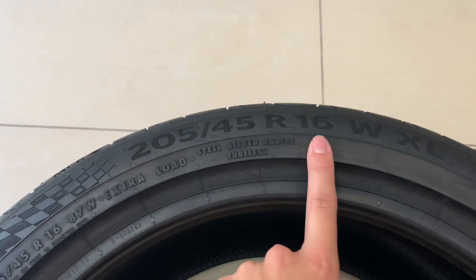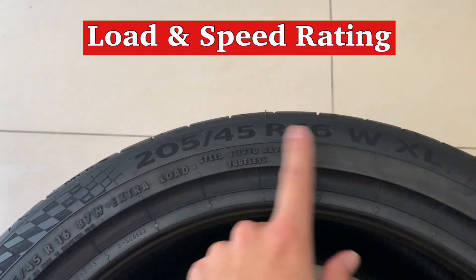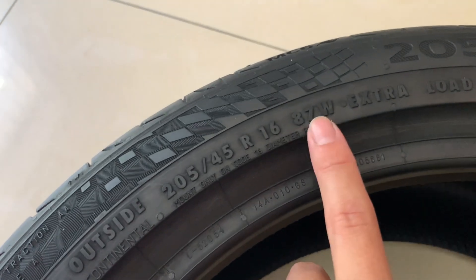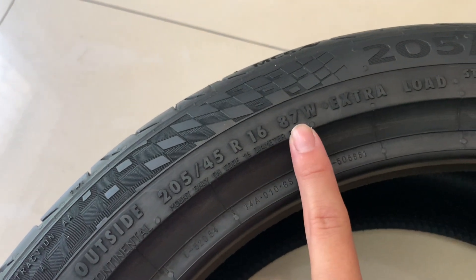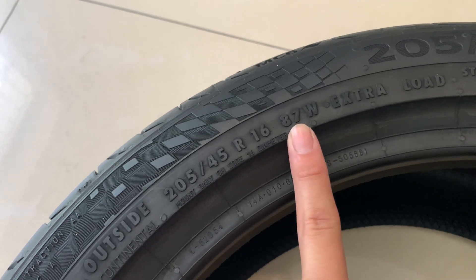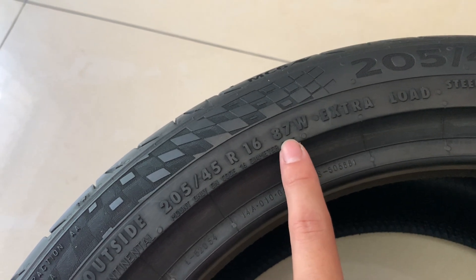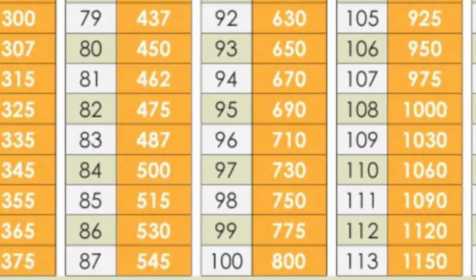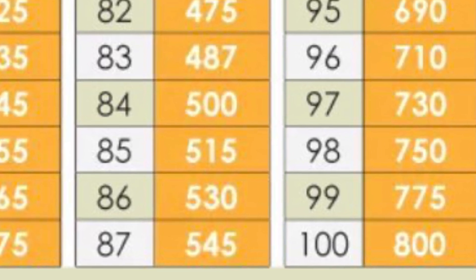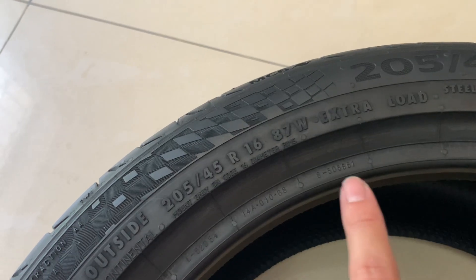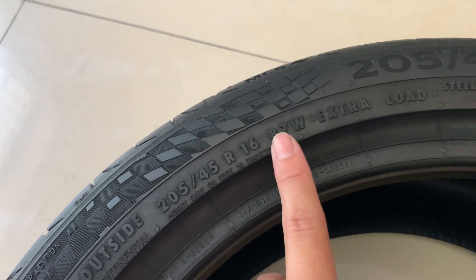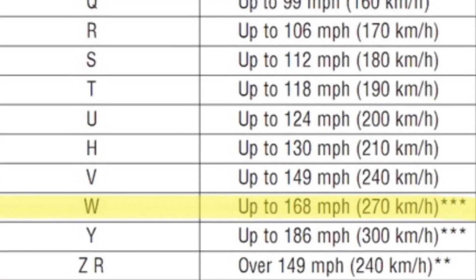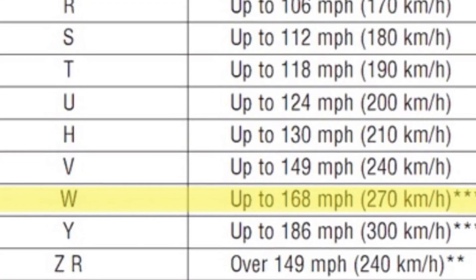Usually after the tyre size you have the load rating and speed rating, though on this tyre they appear separately. The load rating is 87, which you can look up via a tyre load rating table on Google — 87 represents 545kg, meaning this tyre can hold up to 545kg per tyre. Then W is the speed rating, meaning the maximum speed this tyre can handle, which is 270km/h.